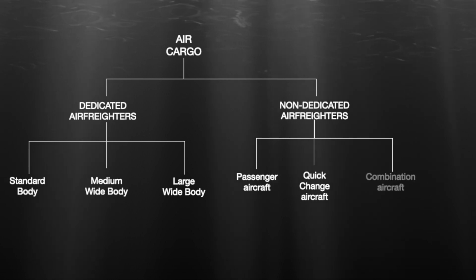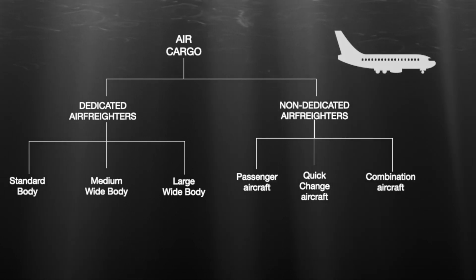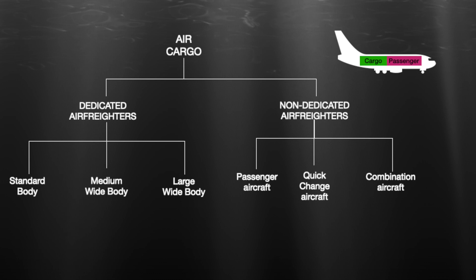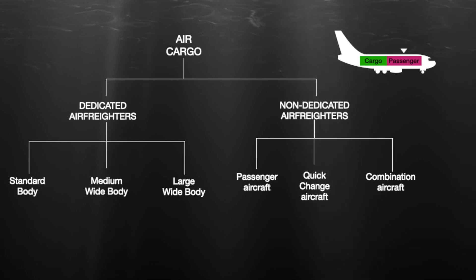Lastly, we have combination aircraft, specifically designed to transport both passengers and freight on their main decks. The main deck is divided into sections, with one portion reserved for passengers and the other dedicated to freight. The partition is usually adjustable depending on passenger demand.